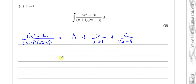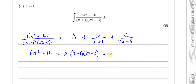Now we're going to multiply both sides of the equation by (x+1)(2x−3). On the left side we're left with 6x² − 16. On the right side we're left with A times (x+1)(2x−3), plus B times (2x−3) — where the (x+1) cancels — plus C times (x+1) — where the (2x−3) cancels. We can use a variety of methods to find what A, B, and C are.